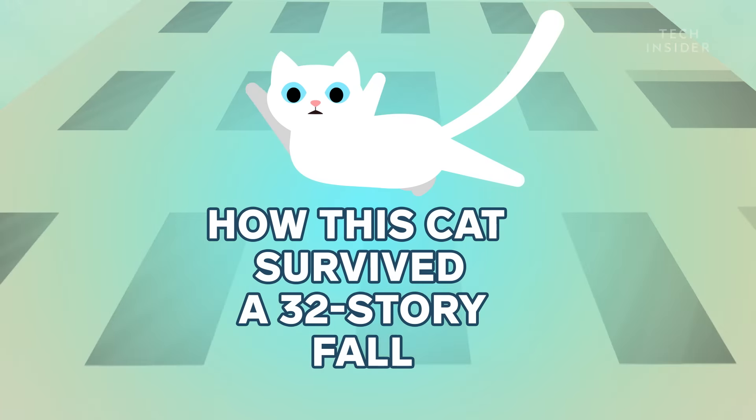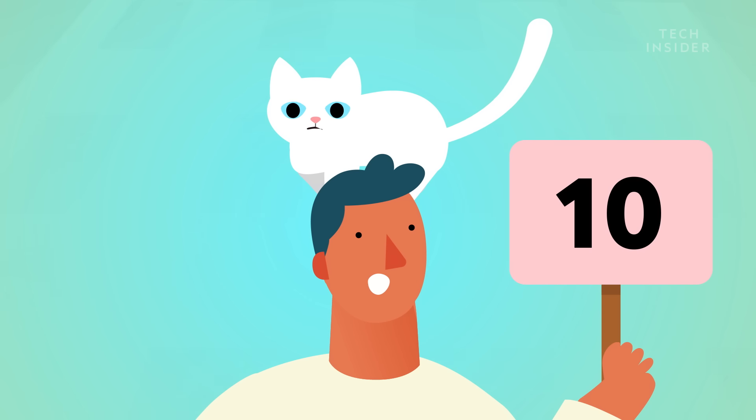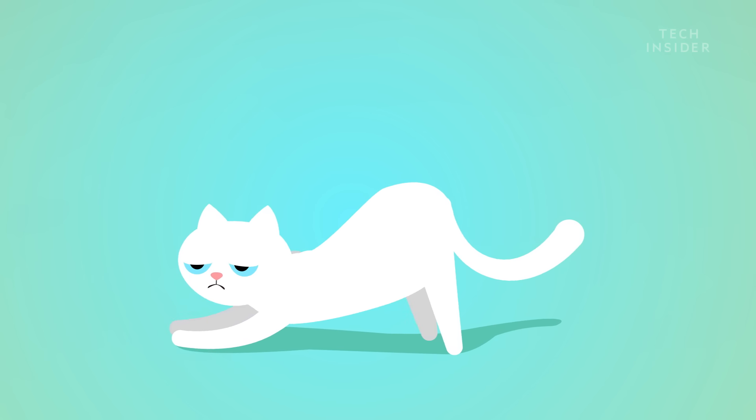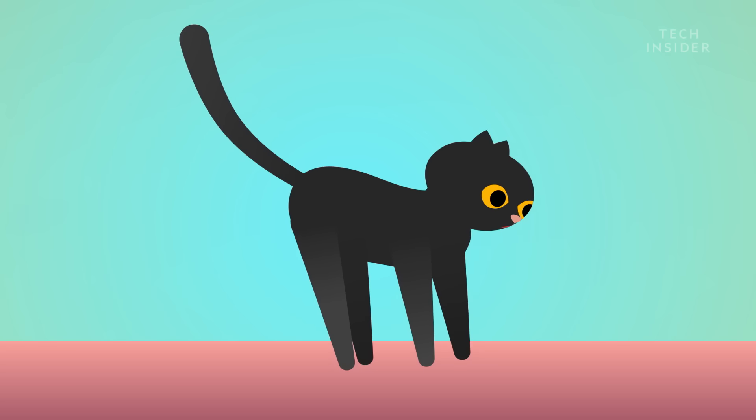Cats fall a lot, and they've gotten really good at it. Drop a cat upside down, for example, and it will almost always land on its feet. That's because cats are extremely flexible. They can twist their bodies mid-air as they fall.